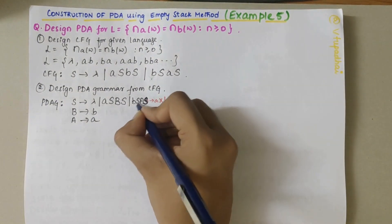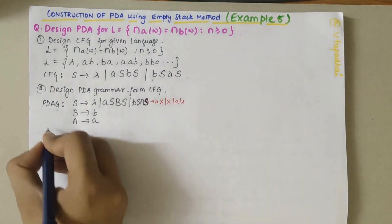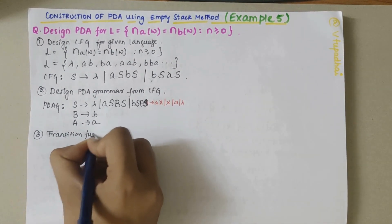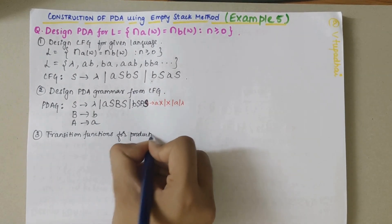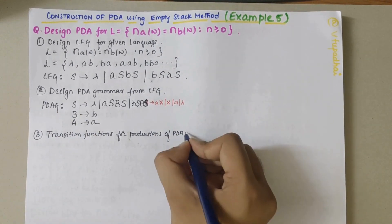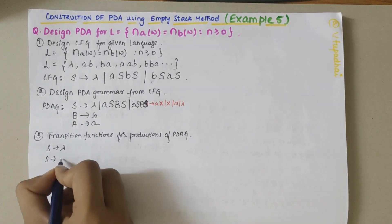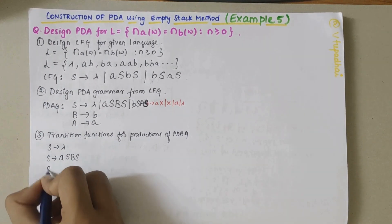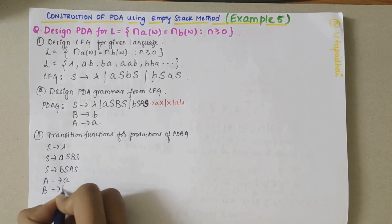The PDA grammar obtained has the following productions: S → λ, S → S, S → A S B S, S → B S A S, A → a, and B → b. This is the PDA grammar. The next step is to define the transition functions for the productions of the PDA grammar.